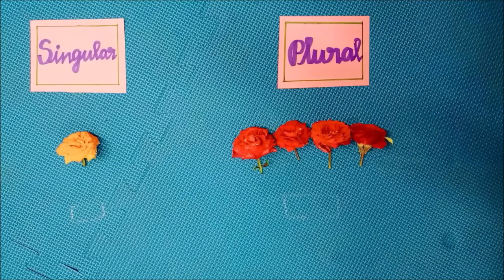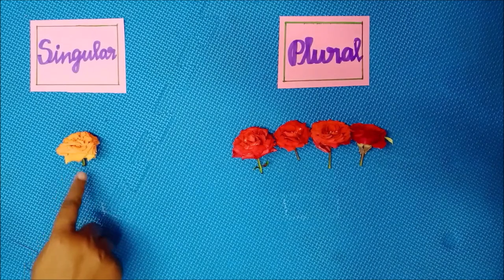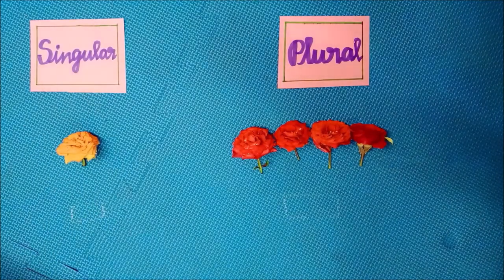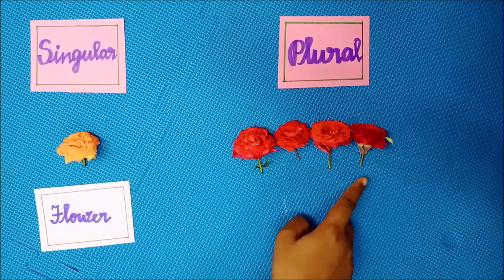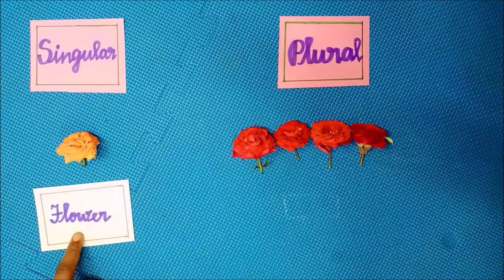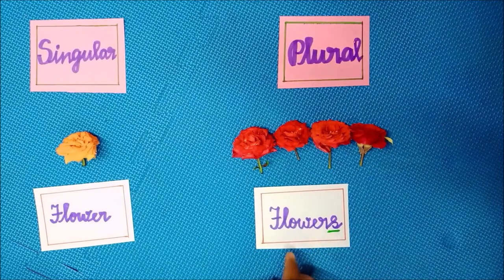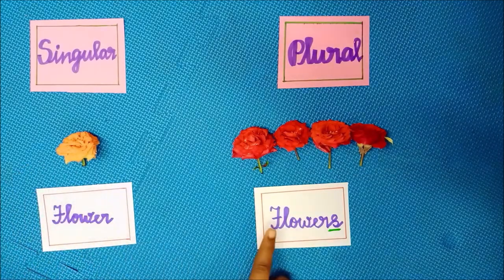Let us see some more singular and plural examples for better understanding. Look at the given picture. This is a flower — it is singular because there is only one flower. Now count: one, two, three, four flowers. So the plural form of flower is flowers, F-L-O-W-E-R-S.